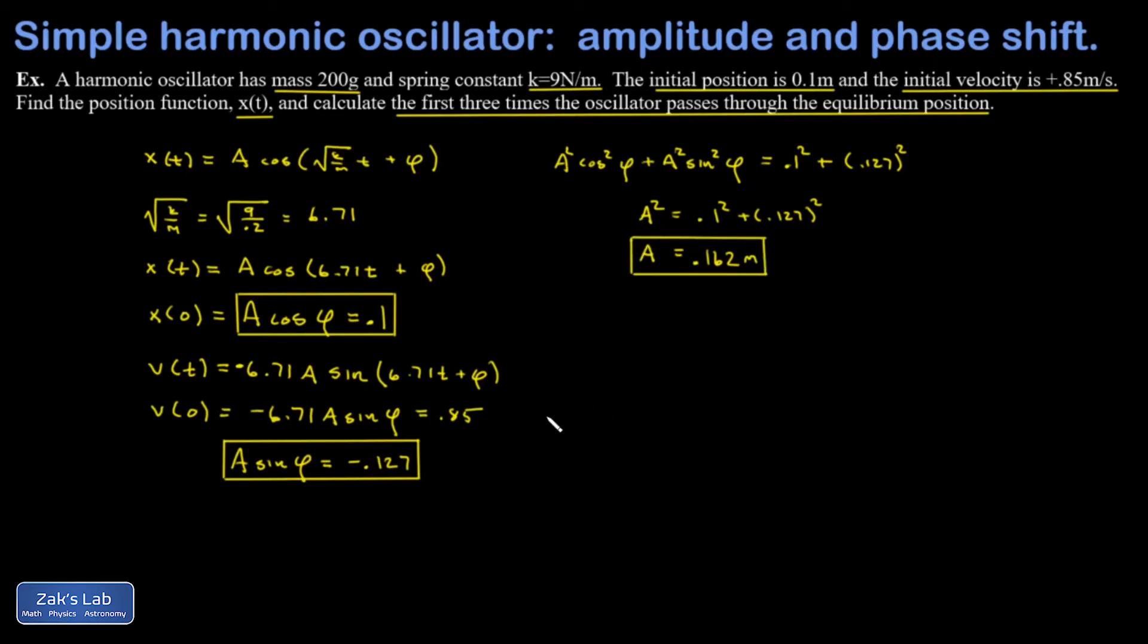Then how do I get the phase angle? Again, it's a familiar trick. I'm going to take this bottom equation and divide by the one up here. And that gives me A sine φ over cosine φ or tangent φ on the left-hand side. I'll go ahead and write out the steps real quick. So on the left-hand side, the A's cancel, giving me tangent φ.